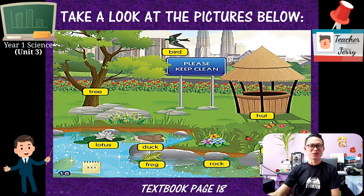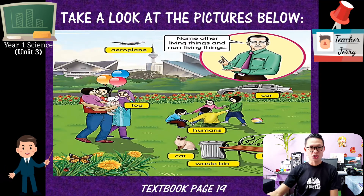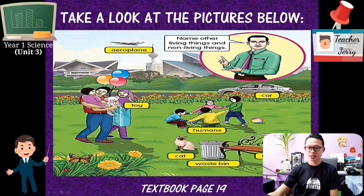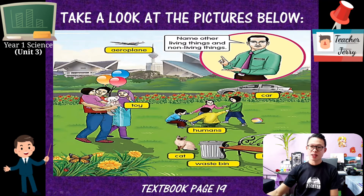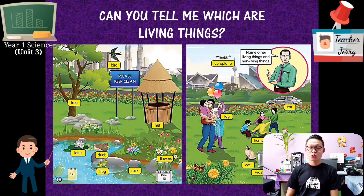Take a look at the first picture. Then we go to the second picture on page 19. You can see an aeroplane, a toy, a car, a human, a cat, a waste bin, and a bench. Can you tell me which are living things and which are non-living things?